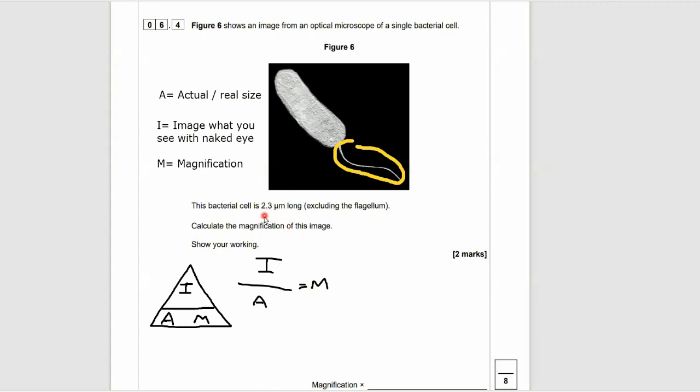Now we go and substitute in the data that we already have. We have 2.3 micrometres long. Your eye cannot see something 2.3 micrometres long—that's very small. And anything that they're showing you is the image size. So we've got 2.3 at the bottom. That's the actual size or real size. And that equals M if we divide it by I.